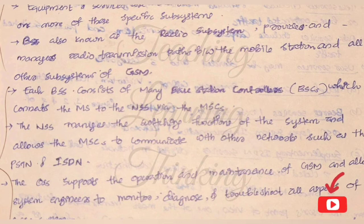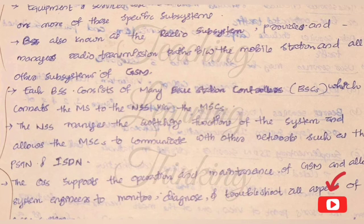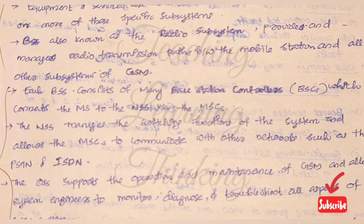The NSS manages the switching functions of the system and allows the MSC to communicate with other networks such as PSTN (Public Switched Telephone Network) and ISDN (Integrated Services Digital Network).